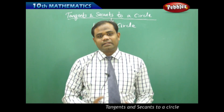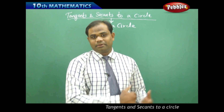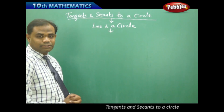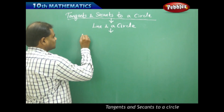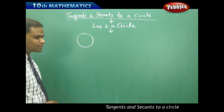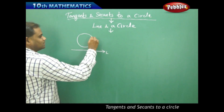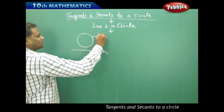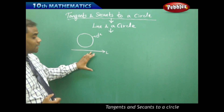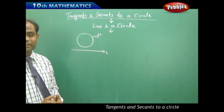Let me consider a circle and a line and see how different cases arise, as seen in the previous session. Considering a line and a circle, in case 1 I have a circle with a suitable radius and a line which does not intersect. This is the line L and this is the circle. So for a circle and a line, one possibility is that the line does not intersect the circle.